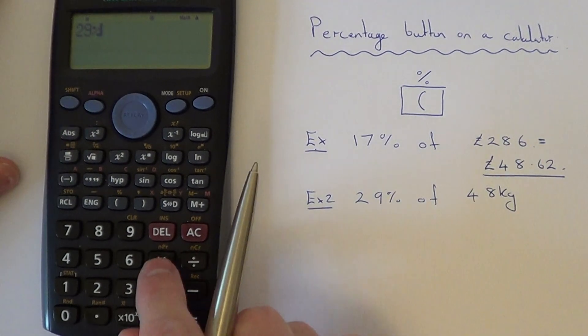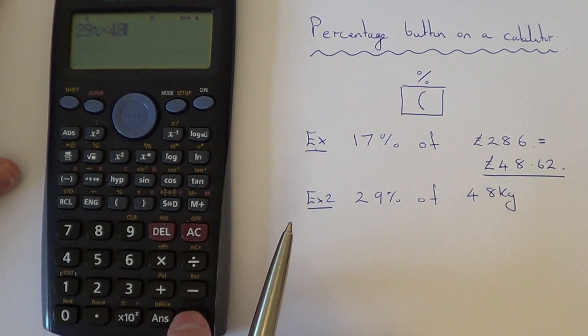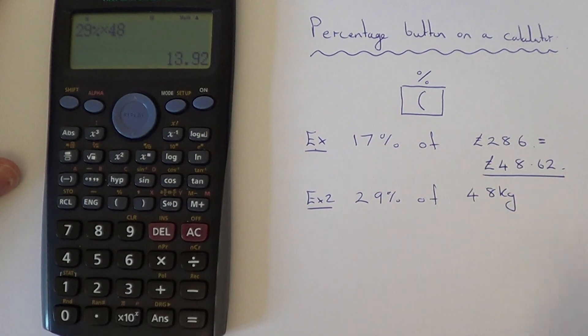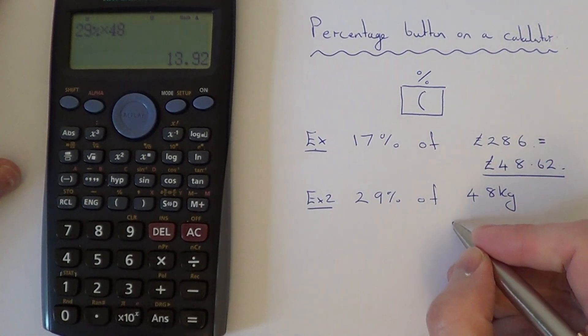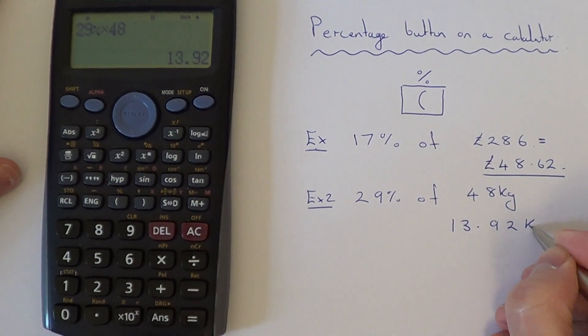Instead of 'of' use the times key, then type in 48. Hit your equals key and SD the answer, and that will give you 13.92 kilograms.